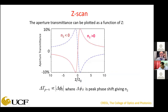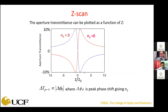That was for self-focusing nonlinearity, giving a valley followed by a peak. For self-defocusing nonlinearity you get a peak followed by a valley. The change in transmission between peak and valley is directly proportional to the phase distortion, which if it's n₂, is directly proportional to the nonlinear refractive index.